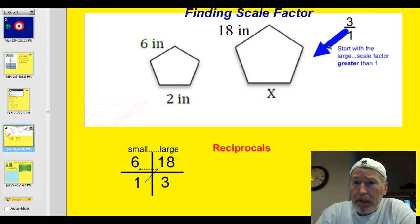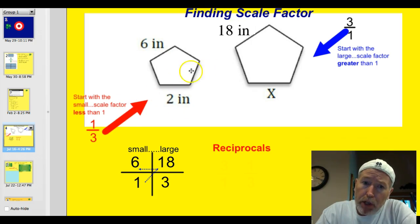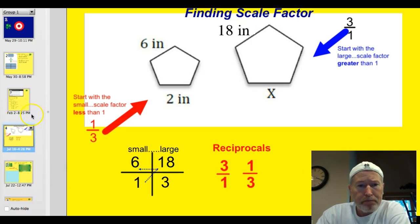Looking at this one up here, it's 3 to 1 because we're going from the larger to the smaller. But if we're going from the smaller to the larger, it's 1 to 3. This one is 1 third the size. This is 3 times the size. And you'll notice that those are reciprocals, 3 over 1 and 1 third. We had this in the last night's lesson.